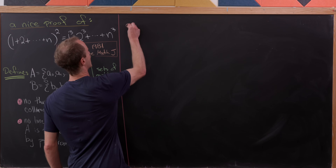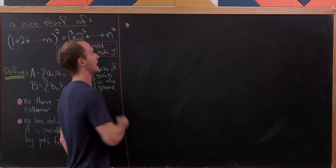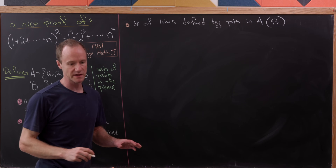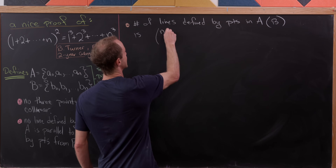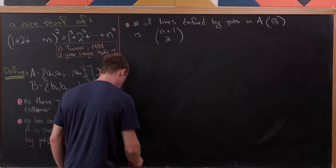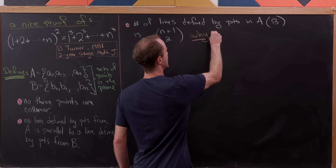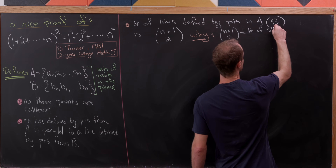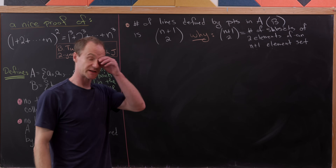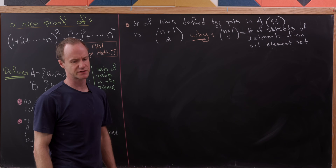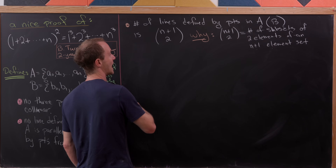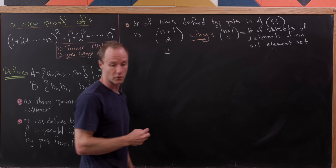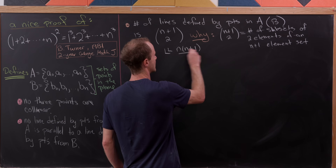Let's note that the number of lines defined by points in A, or equivalently B, is n plus one choose two. That's because n plus one choose two is exactly the number of two-element subsets of an n plus one element set. And that binomial coefficient has the familiar formula n times n plus one over two.